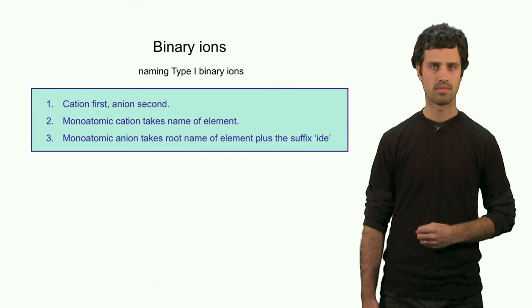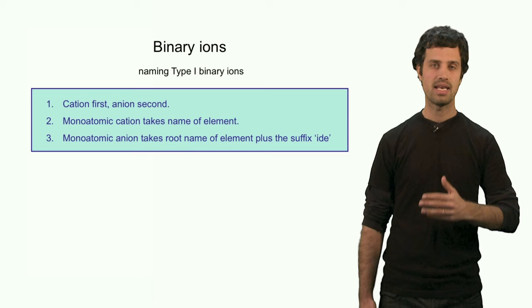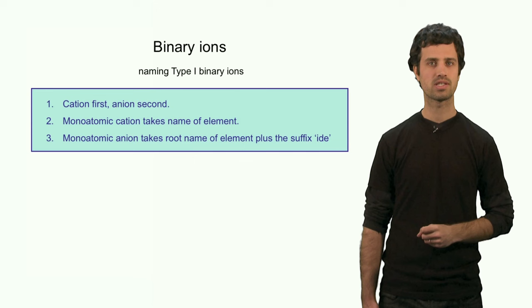In naming these compounds, we use the following set of rules. One: we name the cation first and the anion second. In naming the cation, we use the name of the element. In naming the anion, we use also the name of the element, but with the suffix '-ide'.